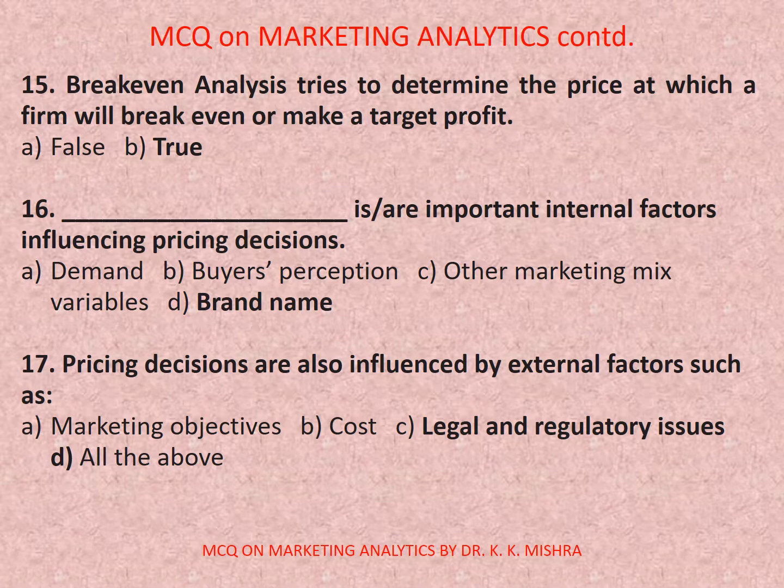Question number sixteen: Dash are important internal factors influencing pricing decisions. Options are: a) demand, b) buyer's perception, c) other marketing mix variables, d) brand name. Correct option is a) demand, as one of the important factors influencing pricing decisions.